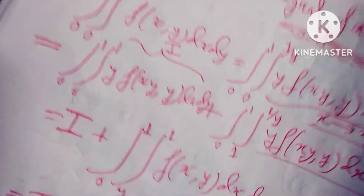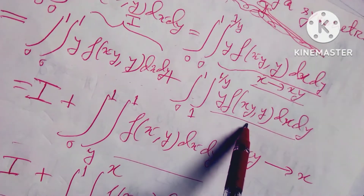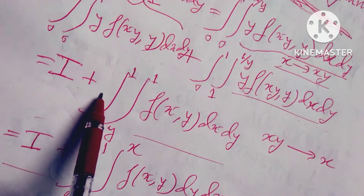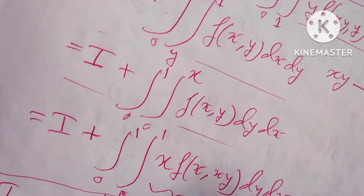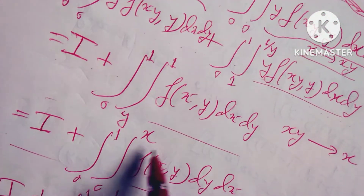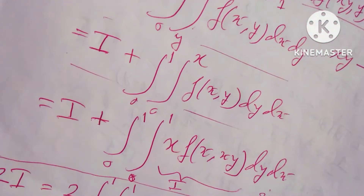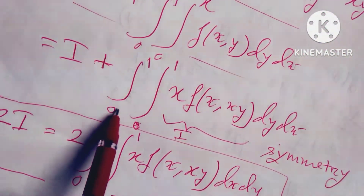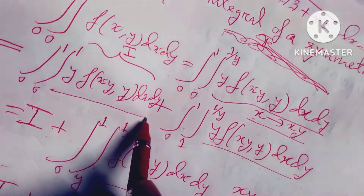Another portion is 0 to 1 and 1 to f(x, y) dx dy, equal to y into f(x, y) dx dy, equals I plus 0 to 1 and 1 to y, to 1 f(x, y) dx dy. Then I plus — after that I change the limit because this is 1 to y, so it is 0 to x. Limit changing: 0 to 1, 0 to x, f(x) dx dy. So I equals 0 to 1, 0 to 1, x into f(x) dx.